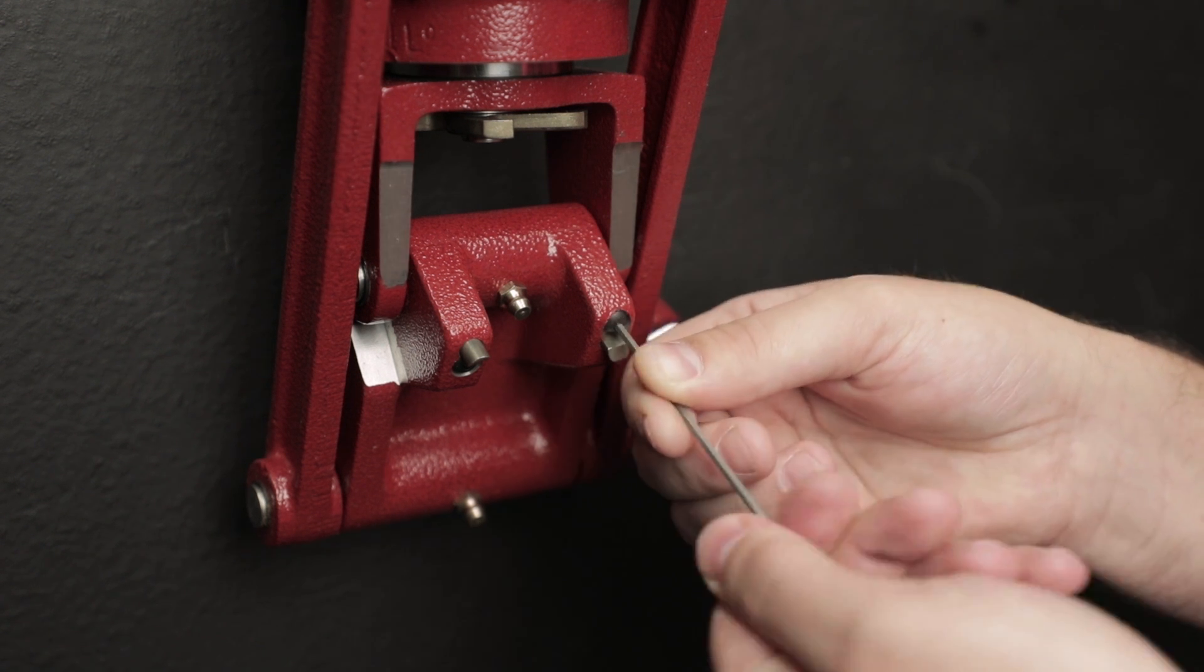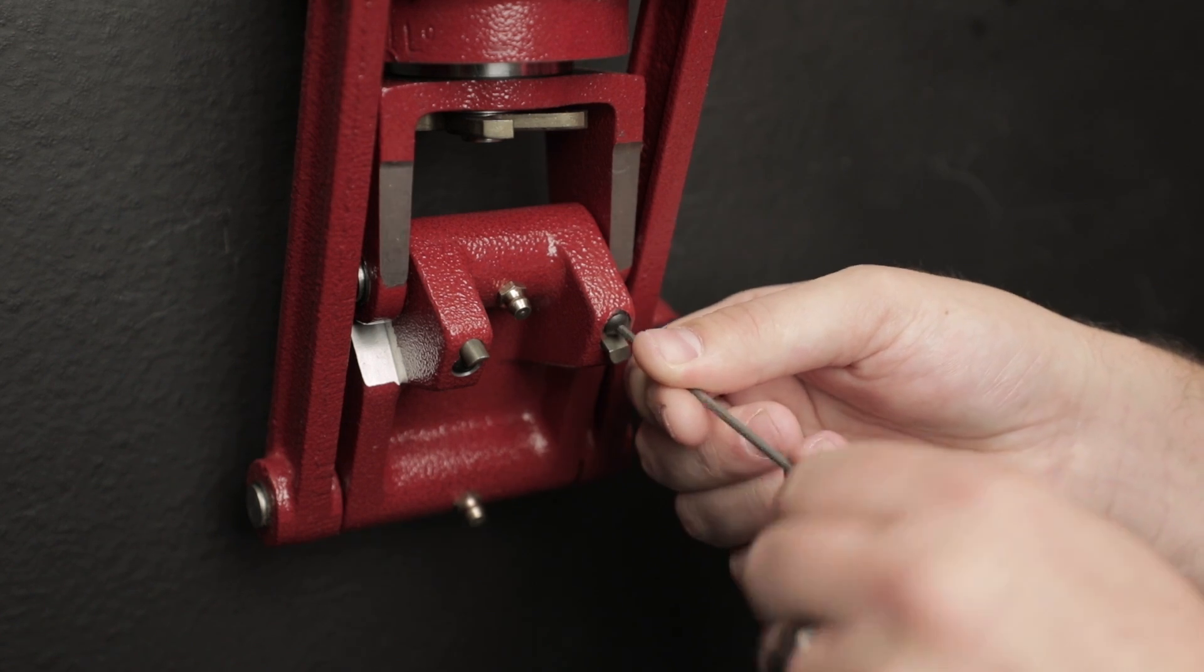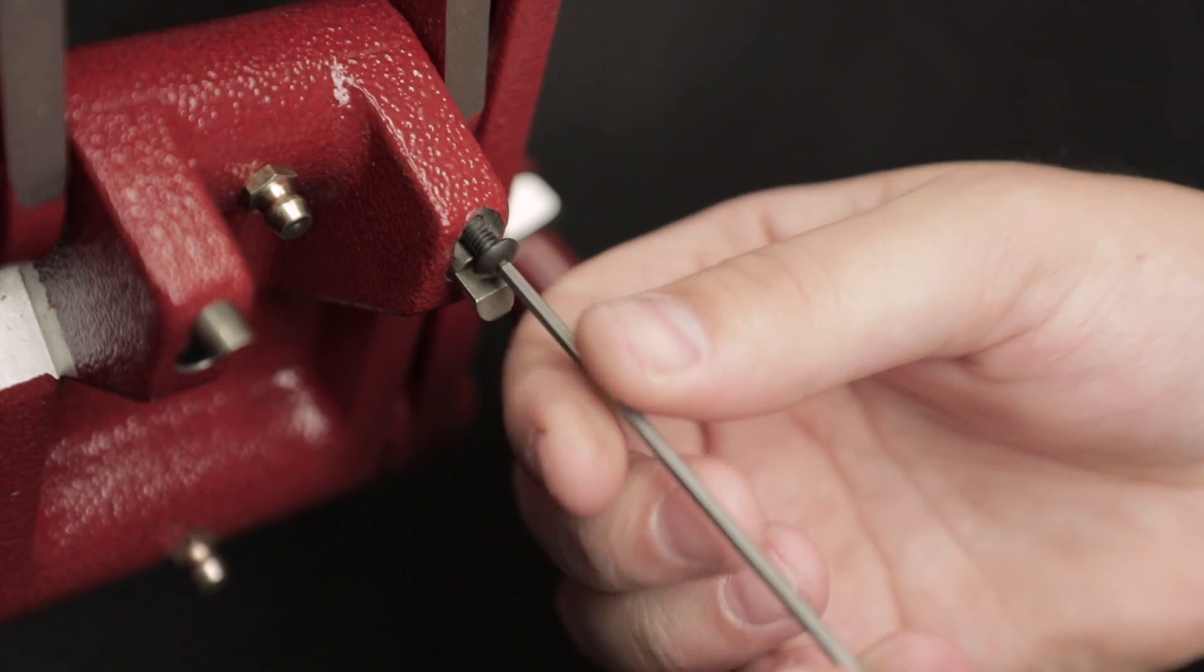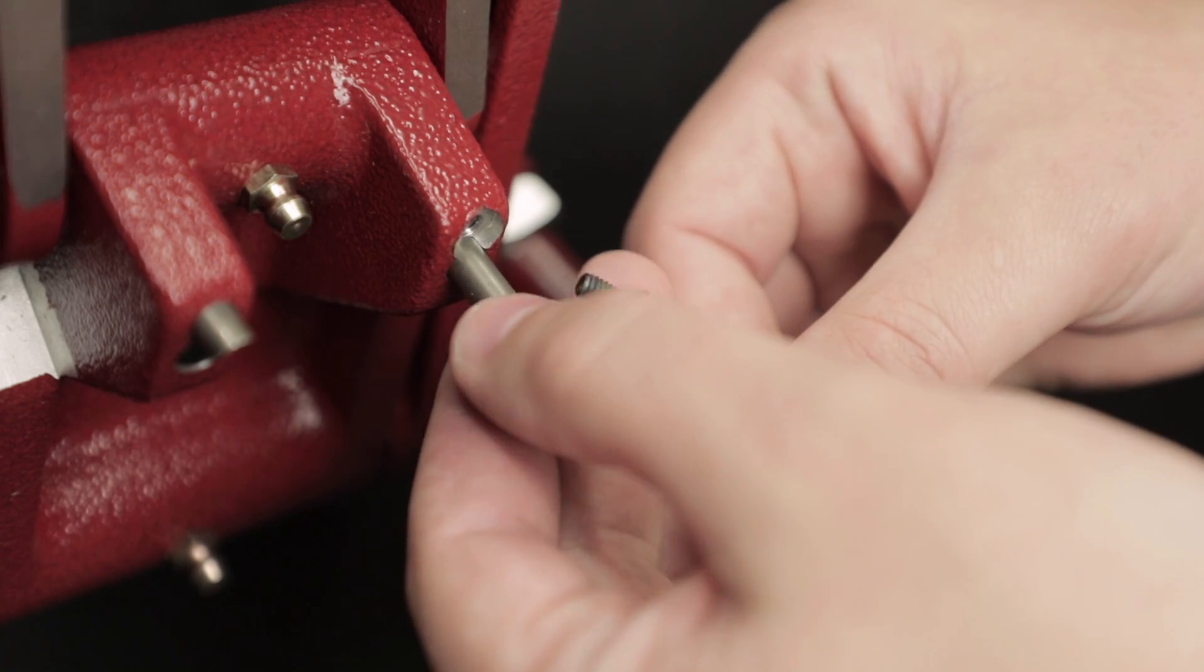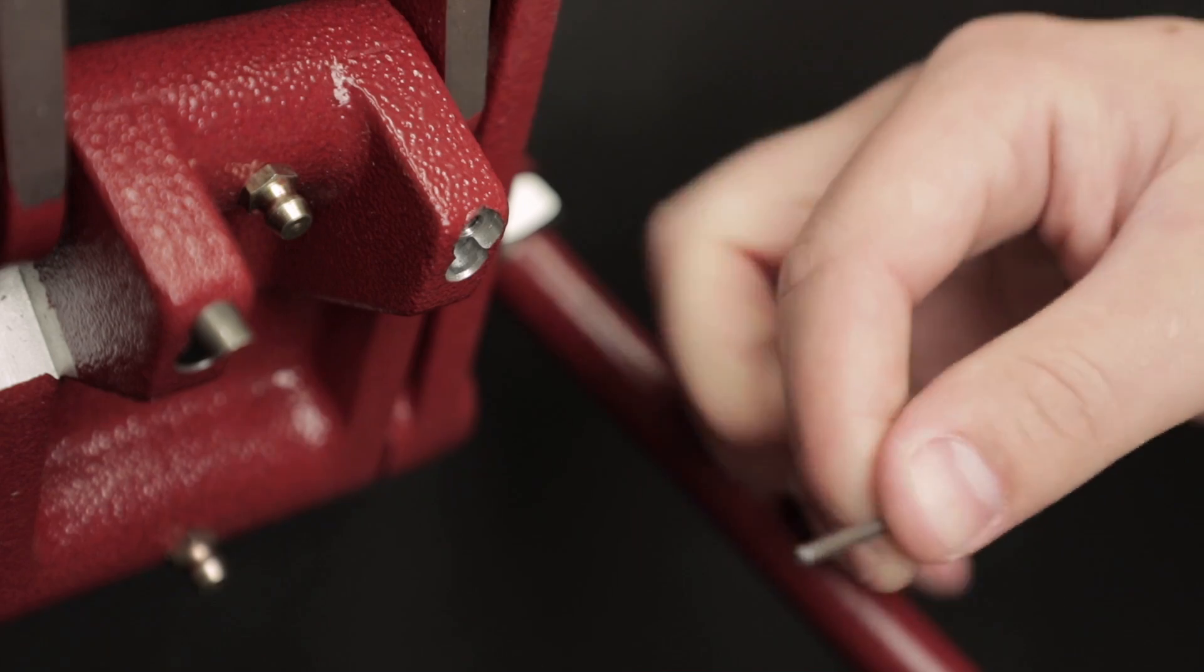Now let's back the set screw completely out and we're going to remove the pawl and the spring from the toggle. The pawl, and there should be a spring tucked up inside here.